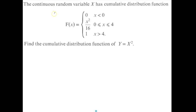In this video, we will look at this problem here. We are told that a continuous random variable x has cumulative distribution function, CDF, given by F of x equals 0 for x less than 0, x squared over 16 for x from 0 to 4, and 1 for x greater than 4. We are asked to find the CDF of a second variable given by y equals x squared. So a second variable y depends on x.